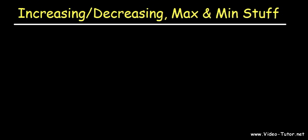In this video, we're going to focus on finding the intervals where the function is increasing and where it's decreasing. We're going to talk about how to identify the relative extremum — where the maximum and minimum is located — and also how to find the critical points. So let's say if we have this equation: y is equal to 2 minus x squared. Let's analyze it graphically.